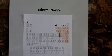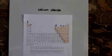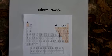Let's look at writing a formula for this compound, calcium chloride. First thing we do is decide if it's ionic or covalent.